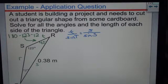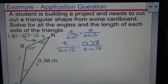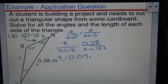And I get t over sine 12 equals 0.38 over sine 123. I put this through my calculator, and I solve it, and I get t equal to 0.09 meters.